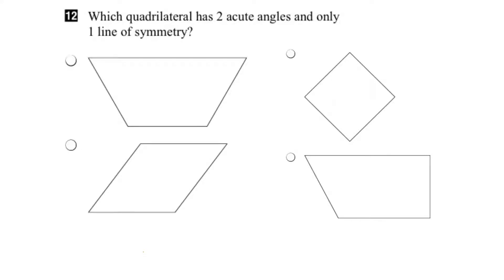In question 12, we have to determine which of these 4 quadrilaterals has 2 acute angles and only 1 line of symmetry.